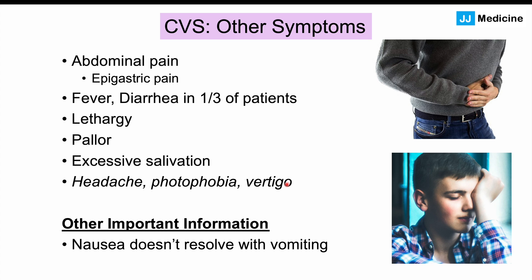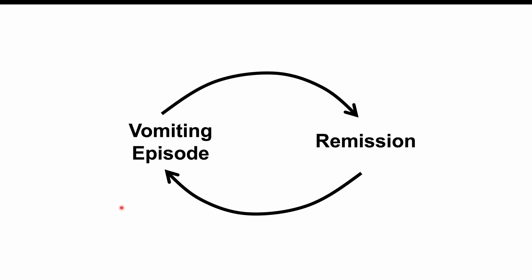Importantly, nausea does not resolve with vomiting — patients still feel nauseous even after vomiting. However, an episode may resolve with sleep. If a patient can fall asleep, the episode can stop, and there are medications that can help patients fall asleep to abort the episode. Patients cycle between vomiting episodes and remission, with triggers leading back into another episode.